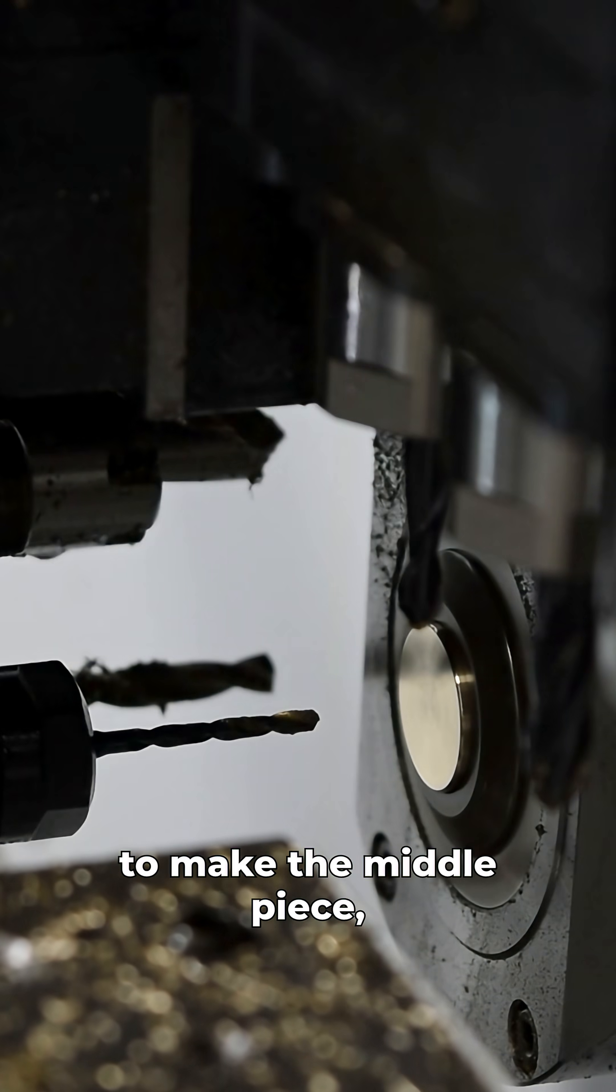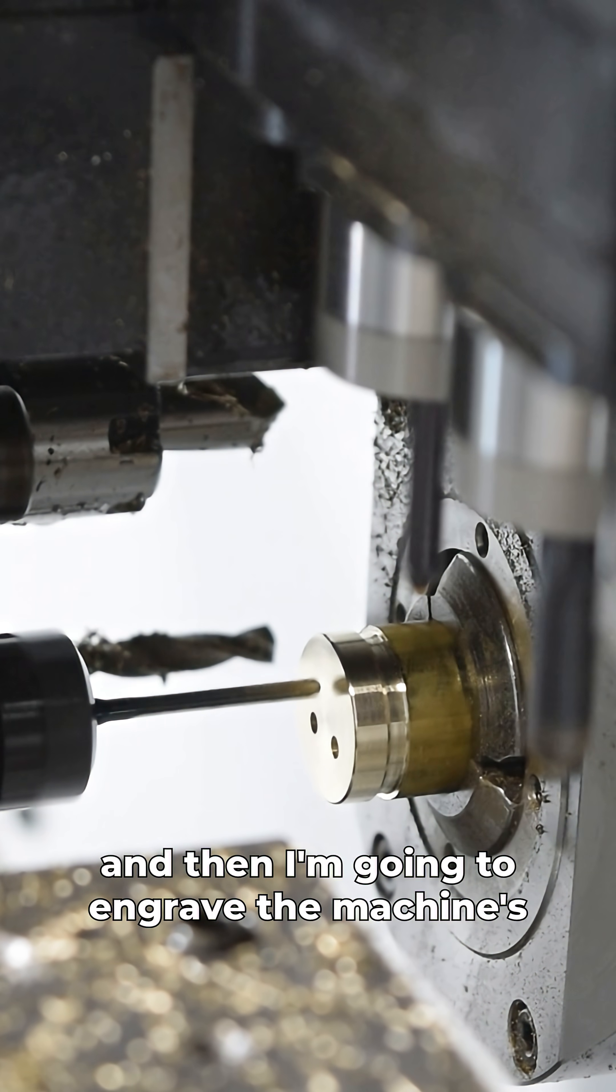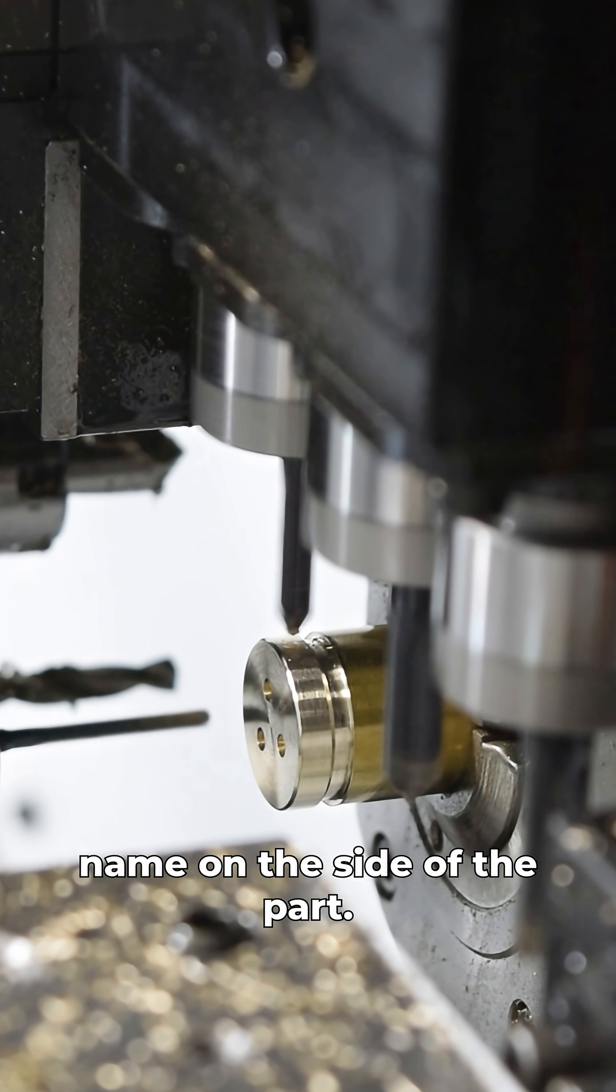After that, I'm going to make the middle piece, which is just a round part with three more holes in it, and then I'm going to engrave the machine's name on the side of the part.